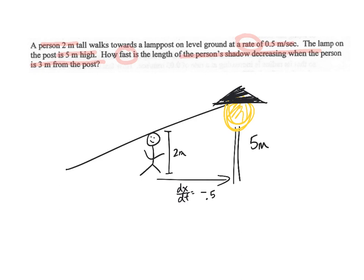Alrighty. The lamp is five meters high. So Mr. Lamp, you're five meters high. How fast is the length of the person's shadow? So if there's the lamp post, then the person's shadow would be - it's going to be the worst shadow ever. It'd be like here. It's a stick figure. Here's his arms. And here's his head.